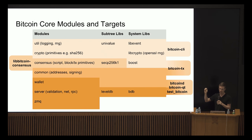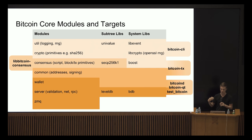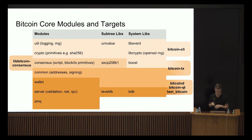We have bitcoin-cli, which is one build target providing a utility command-line interface to communicate with a Bitcoin server — to query chain state, mempool state, or wallet state.